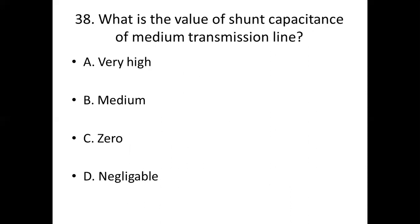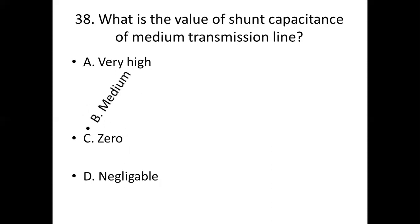38th bit. What is the value of shunt capacitance of a medium transmission line? Option A: very high. Option B: medium. Option C: zero. Option D: negligible. Answer: Option B, medium.